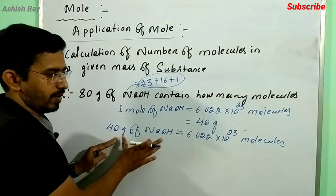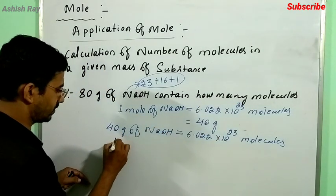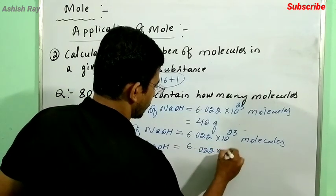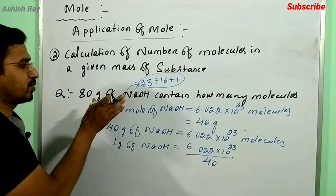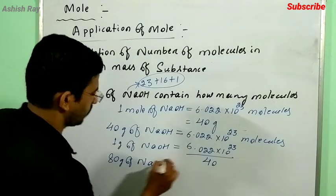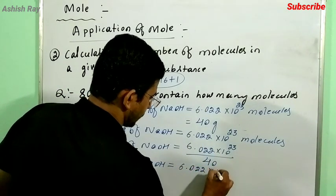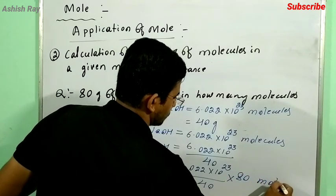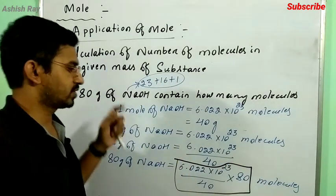So 40 grams of sodium hydroxide contains 6.022 into 10 to the power 23 molecules. That means 1 gram of sodium hydroxide contains 6.022 into 10 to the power 23 divided by 40 molecules. In the question, 80 grams of sodium hydroxide is given, so we multiply: 6.022 into 10 to the power 23 divided by 40, into 80. Simplify this to get the answer.